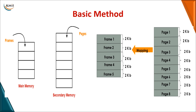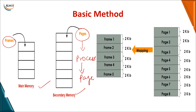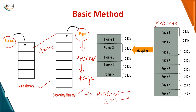In paging, main memory is divided into parts called frames, and secondary memory is also divided into parts called pages. A process can also be divided into parts, each called a page. The size of a page and the size of a frame must both be the same. Secondary memory page division, process pages, and logical memory pages — these terms can be used interchangeably.